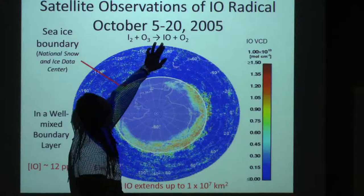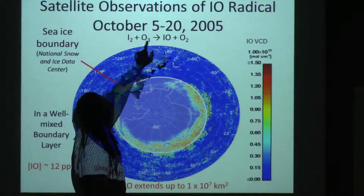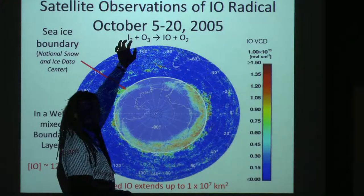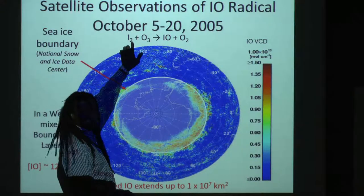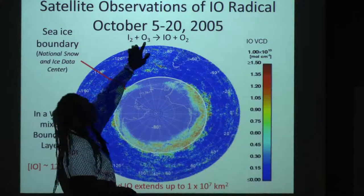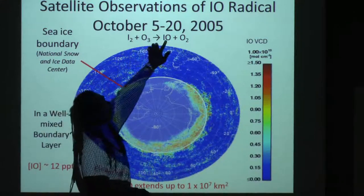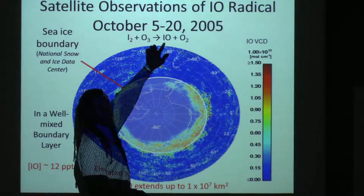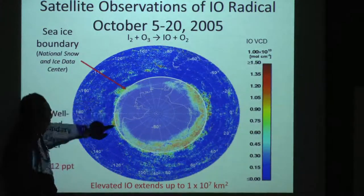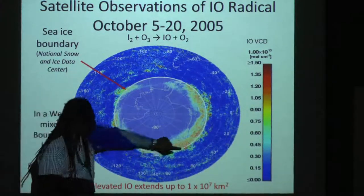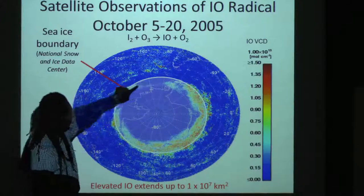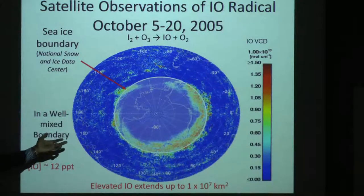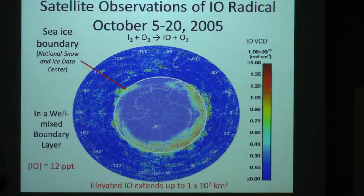IO is a species formed from the reaction of iodine, and we're wondering where all of this is coming from to give such high concentrations, which people measure. If we look at this satellite image and see that it's all around the edge, then it means that maybe some of the source is around there too.